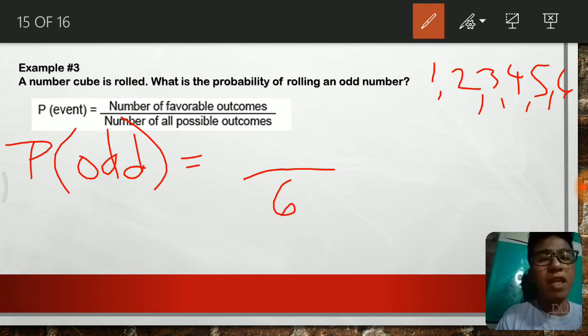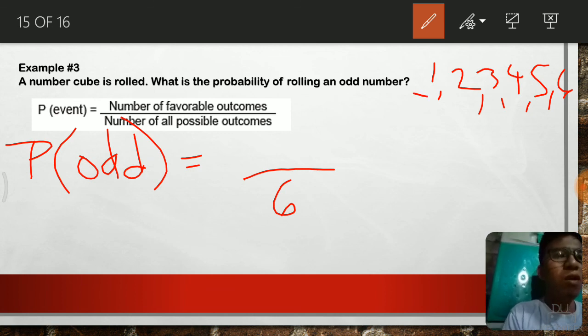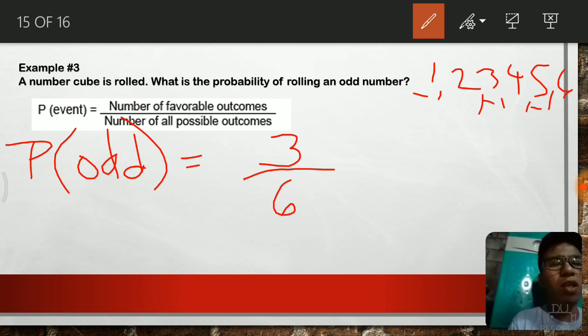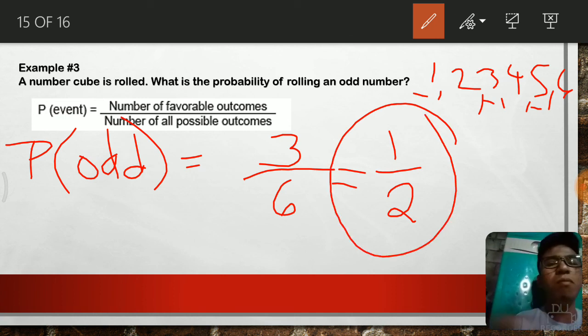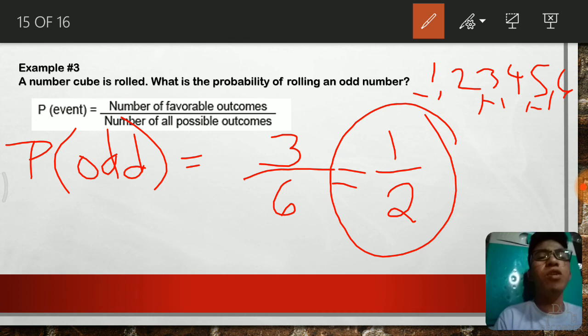Out of these 6 numbers, how many do we classify as odd numbers? The odd numbers are 1, 3, 5. Meaning, the number of all favorable outcomes is equal to 3. That is our fraction. And then to simplify this fraction, 3 all over 6 is also equal to 1 half. And in this problem, the probability of getting an odd number is equal to 1 half.